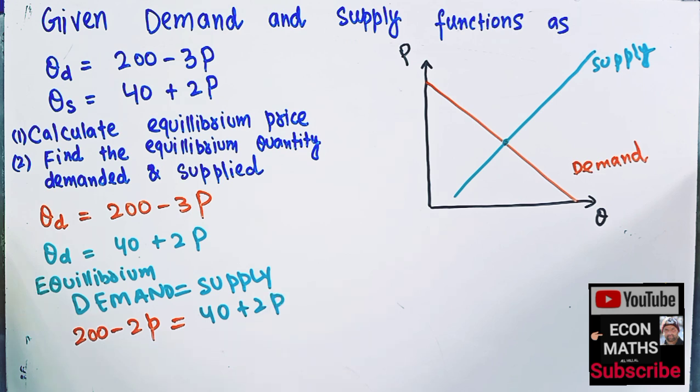Let us transpose this 40 here. So what will we get? We get 200, transposing this 40, it will become minus 40 is equal to... So then we have 2P on this side. If I transpose...